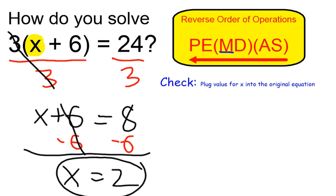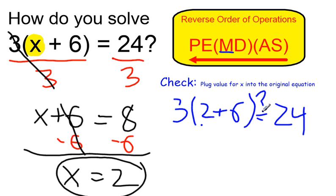I'm going to plug that 2 back in to check, which gives me 3 times 2 plus 6 equals 24. I want to know if that's true, and 2 plus 6 is 8.